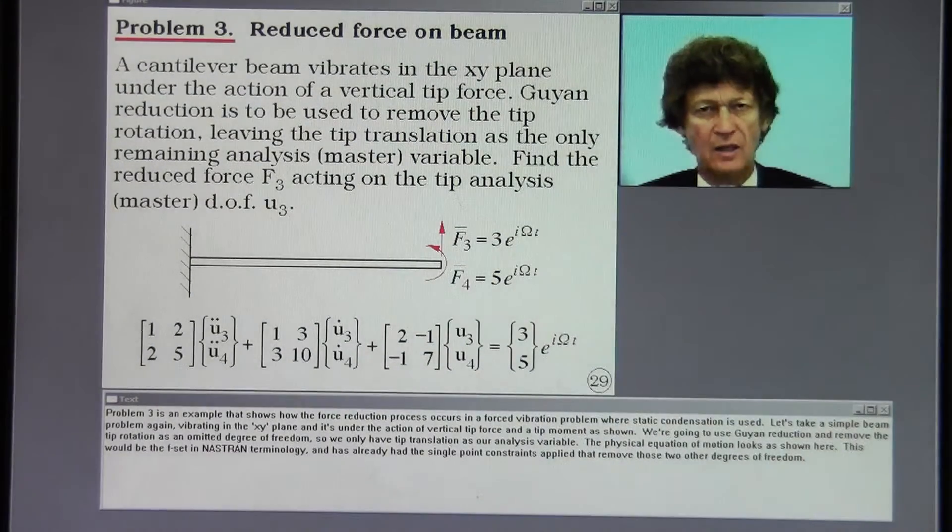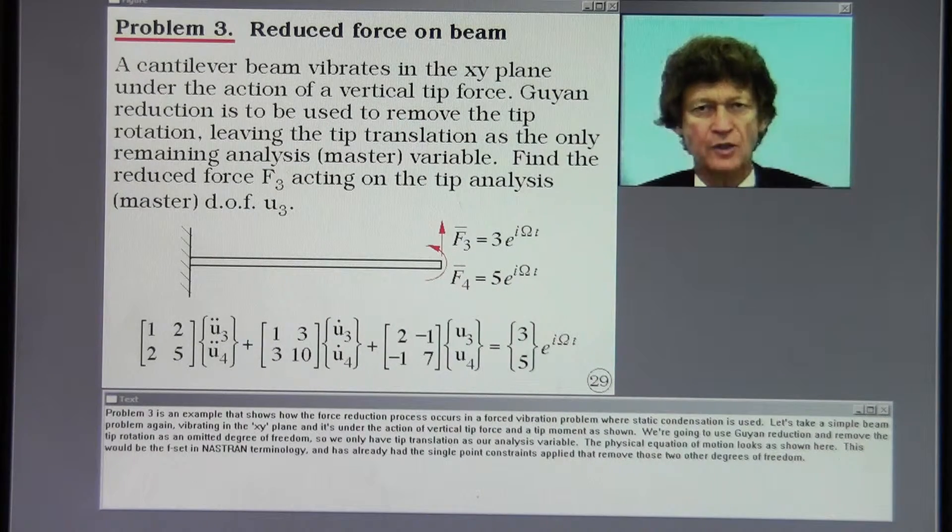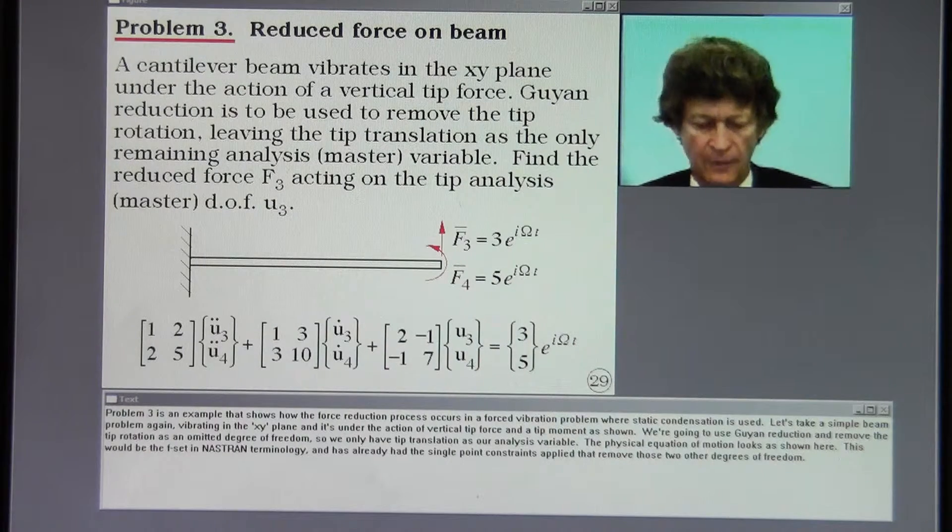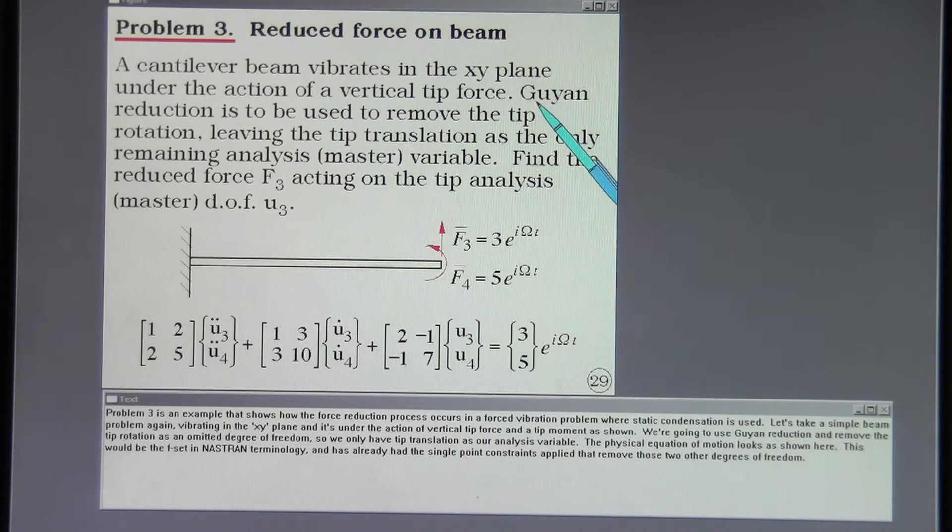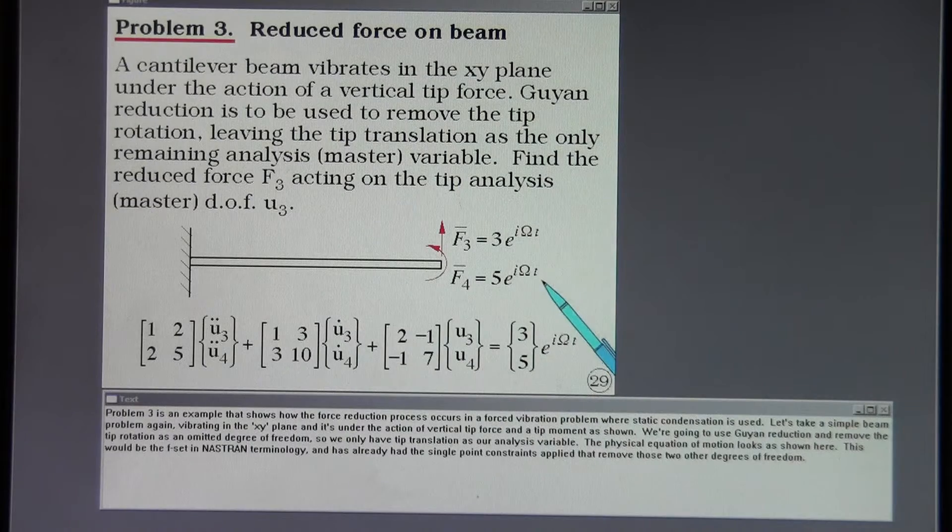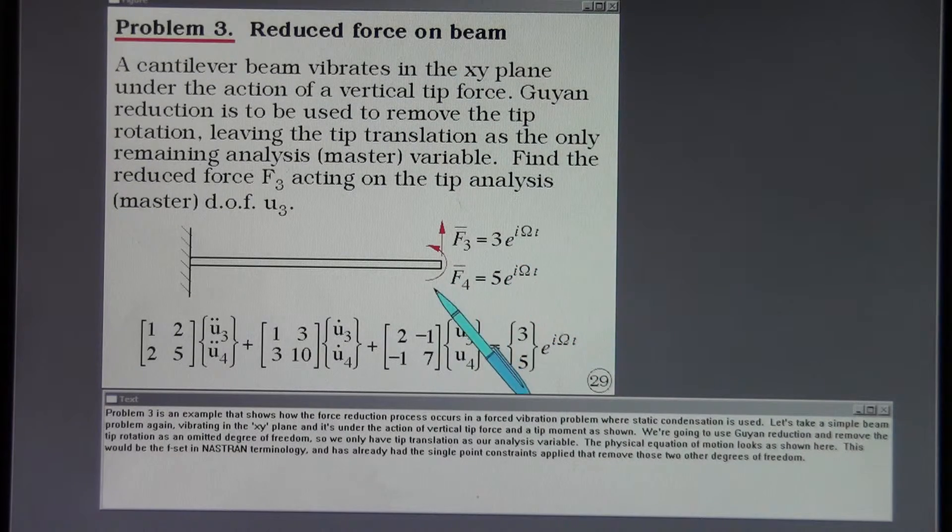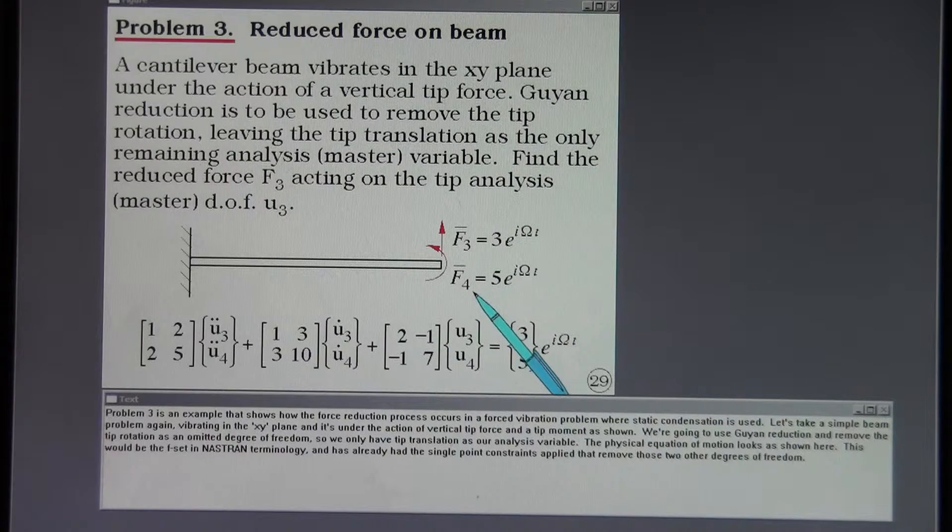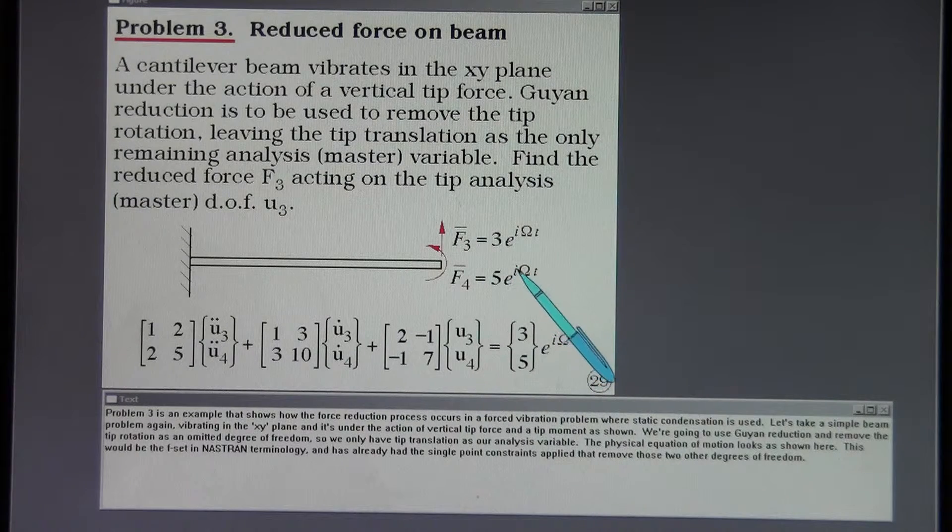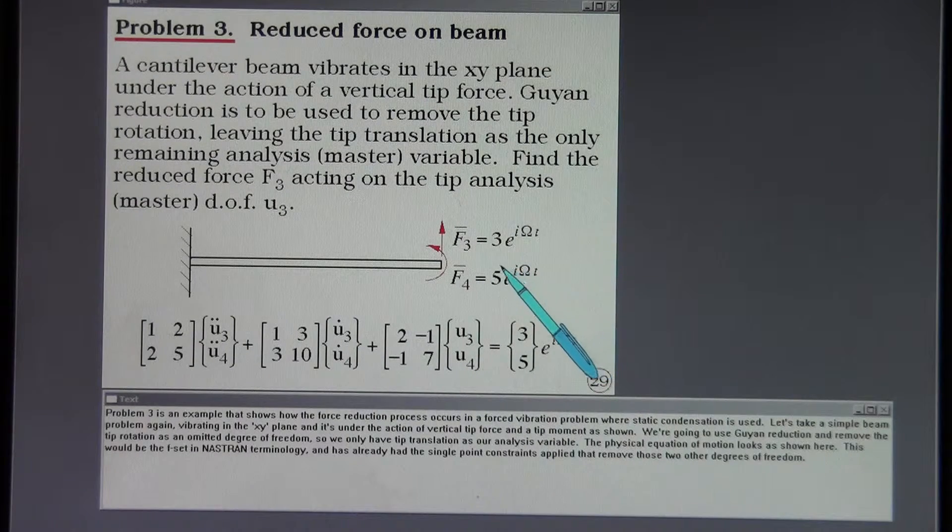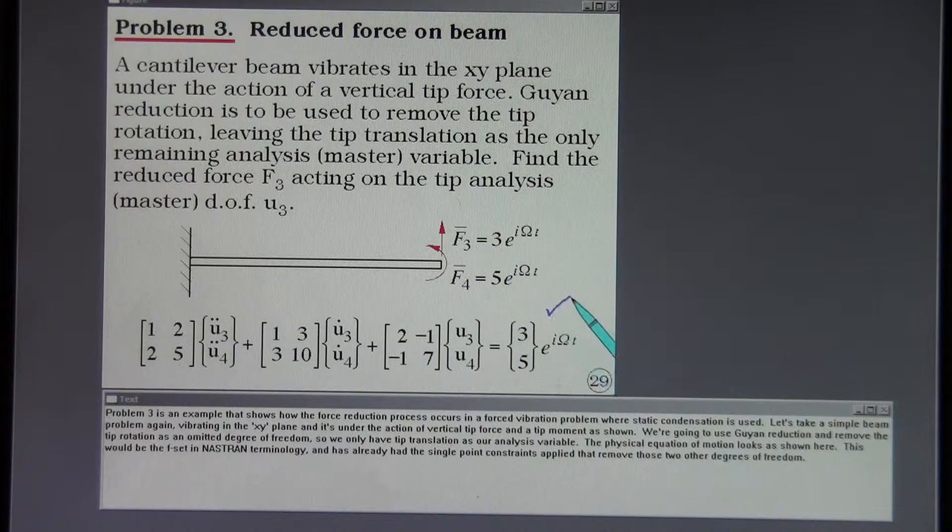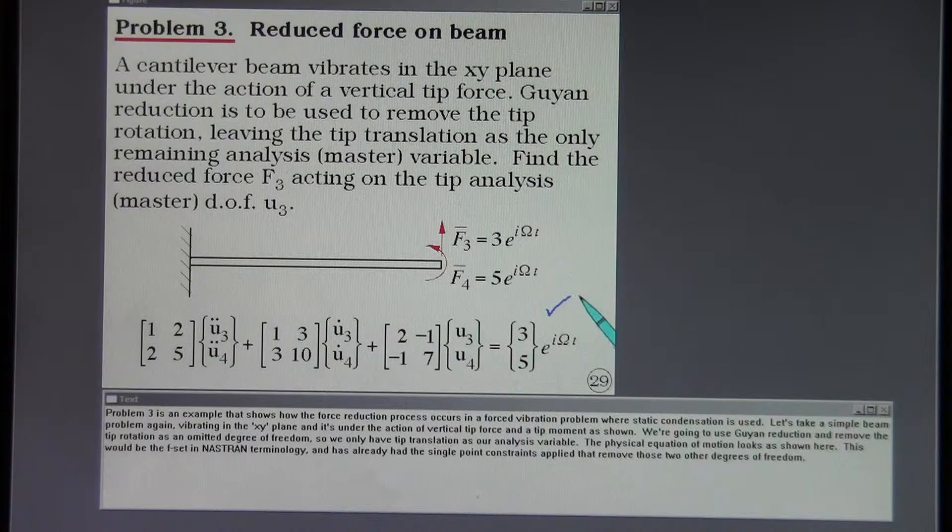Problem 3 is an example that shows how the force reduction process occurs in a forced vibration problem where static condensation is used. Let's take a simple beam problem again vibrating in the XY plane. And it's under the action of vertical tip force and a tip moment as shown. We're going to use Guyan reduction and remove the tip rotation as an omitted degree of freedom. So we only have tip translation as our analysis variable. The physical equation of motion looks as shown here. This would be the F set in Nastran terminology. And has already had the single point constraints applied that remove those two other degrees of freedom.